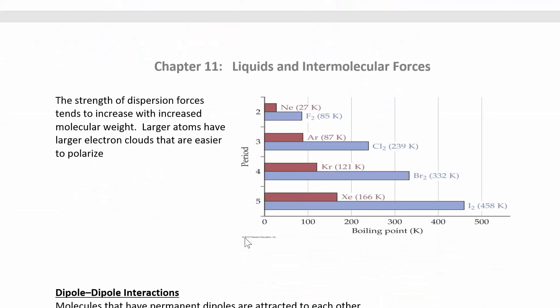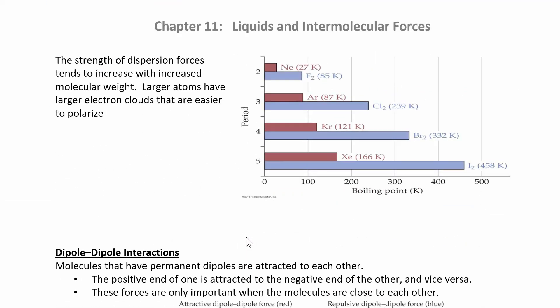One more note about London dispersion forces and how they relate to boiling point. Looking at the noble gases — neon, argon, krypton, xenon — as you increase in molar mass, you also increase in boiling point. Neon is the smallest with molar mass 20 and a boiling point of 27 K, and xenon has molar mass 166. You can compare the same trend with the halogens. Increasing molar mass increases London forces, increasing the boiling point. These are all nonpolar molecules with only London forces, so increasing intermolecular forces gives an increase in boiling point.